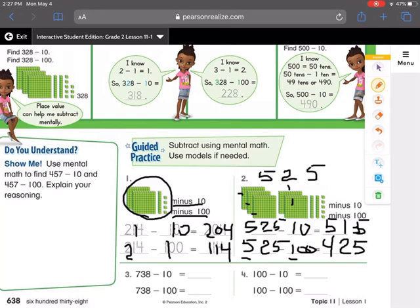See how I just counted backwards? By 1, when I subtracted 100 from 500, or when I subtracted 10 from 525.